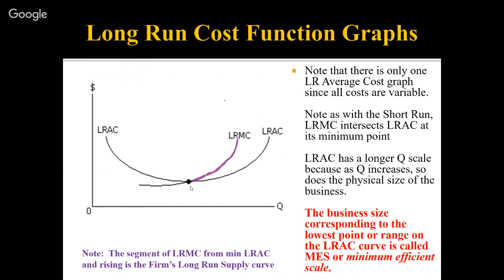At MES, the per-unit cost of production is minimized, so the business is productively efficient — meaning it is using its resources in the best way possible. It's also allocatively efficient, meaning you don't have resources sitting idle or being wasted. Production of goods and services is as efficient as possible.